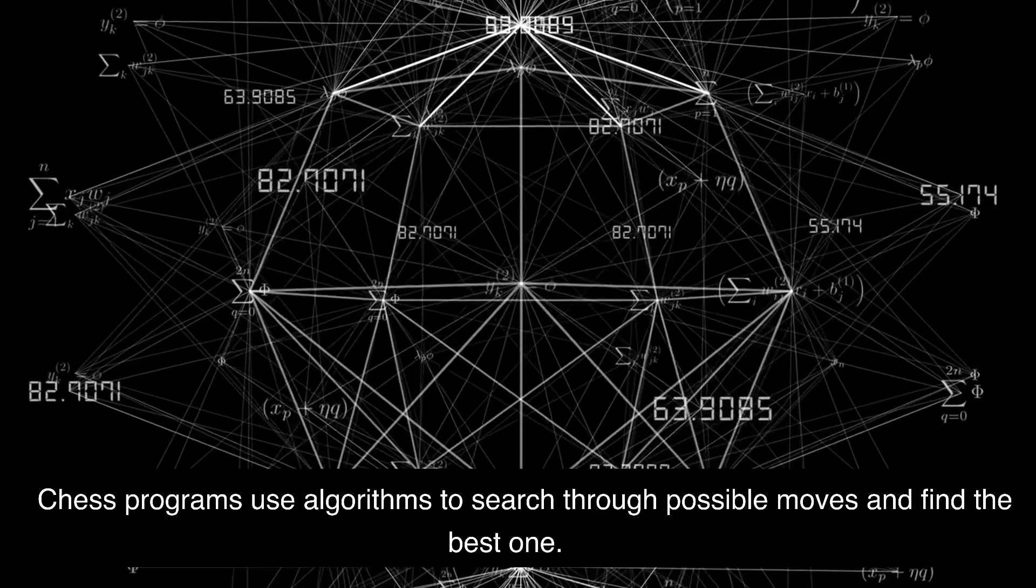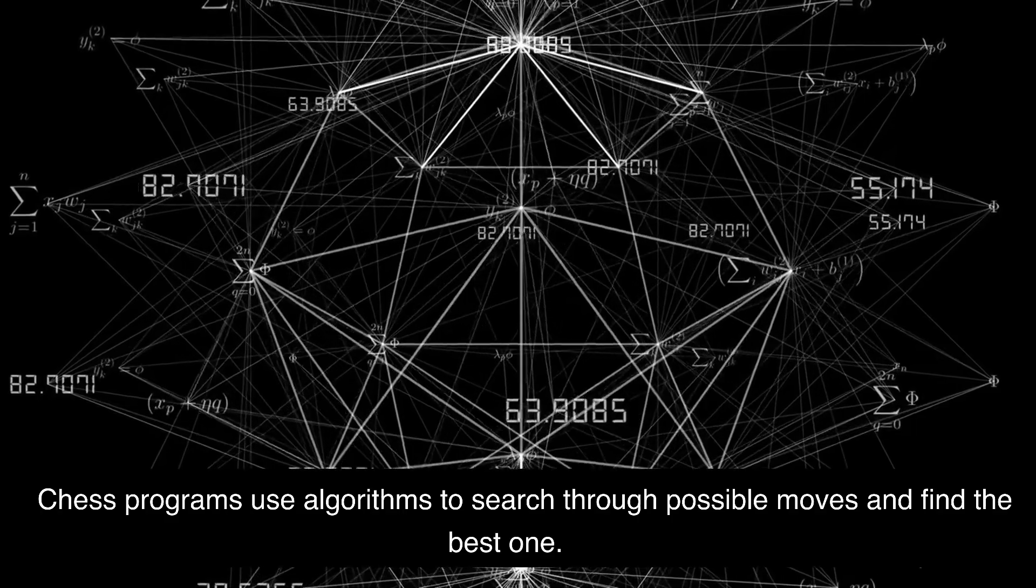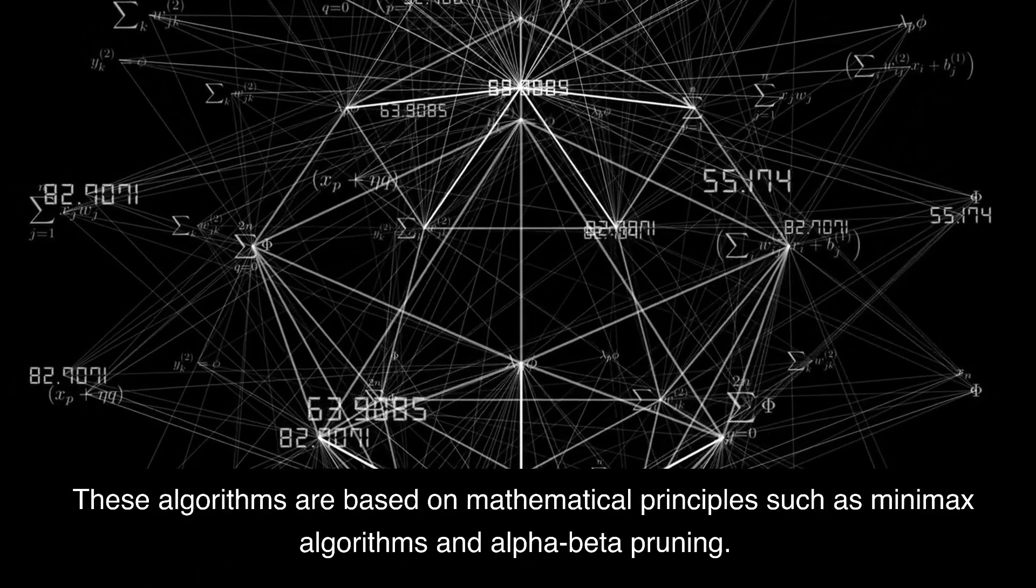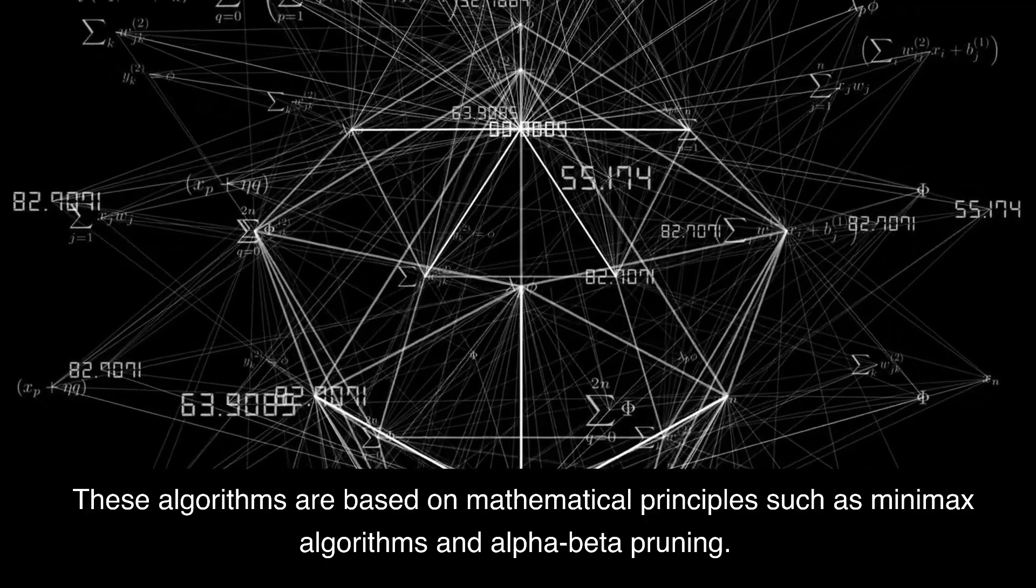Algorithms: Chess programs use algorithms to search through possible moves and find the best one. These algorithms are based on mathematical principles such as minimax algorithms and alpha-beta pruning.